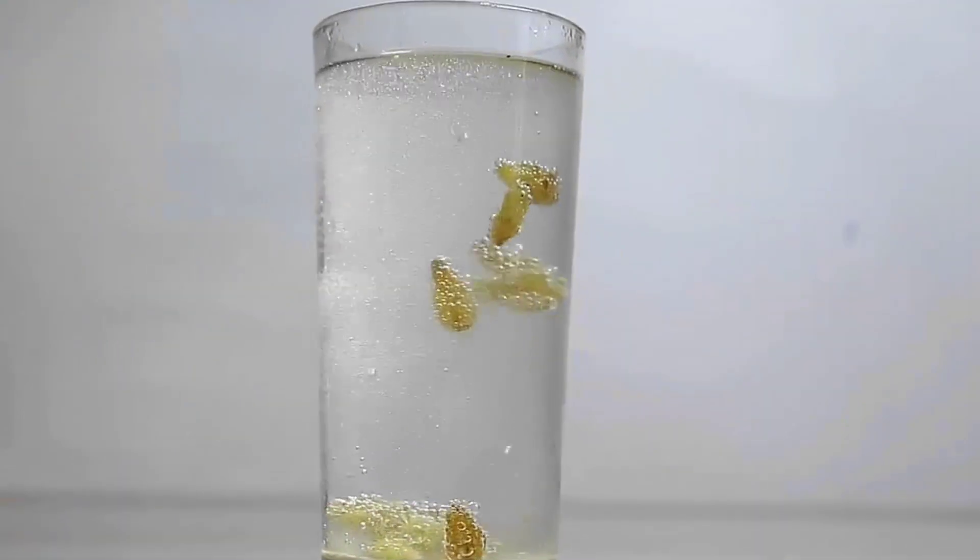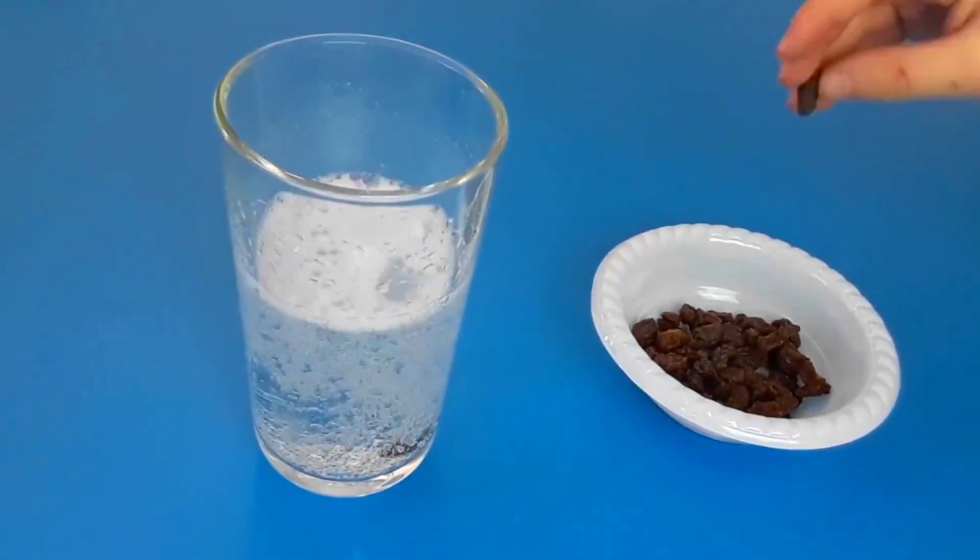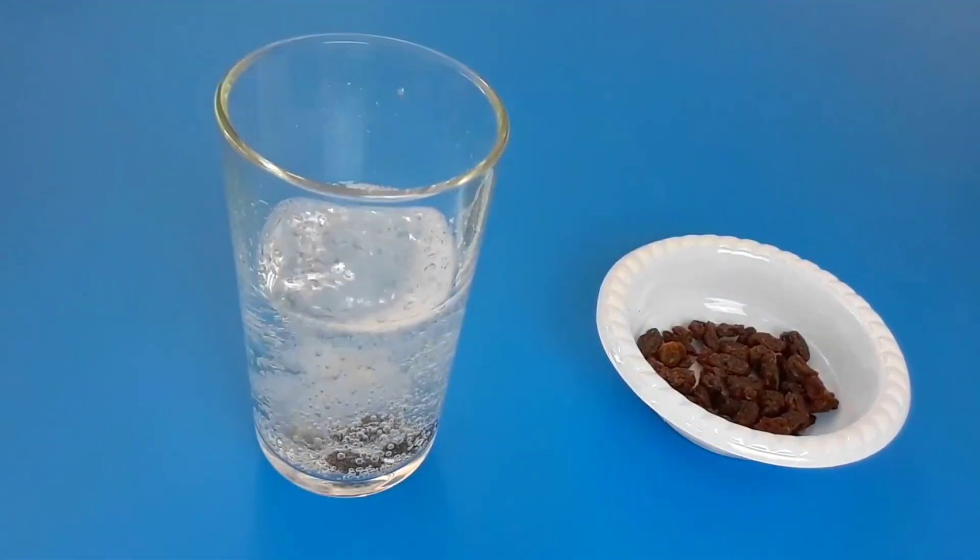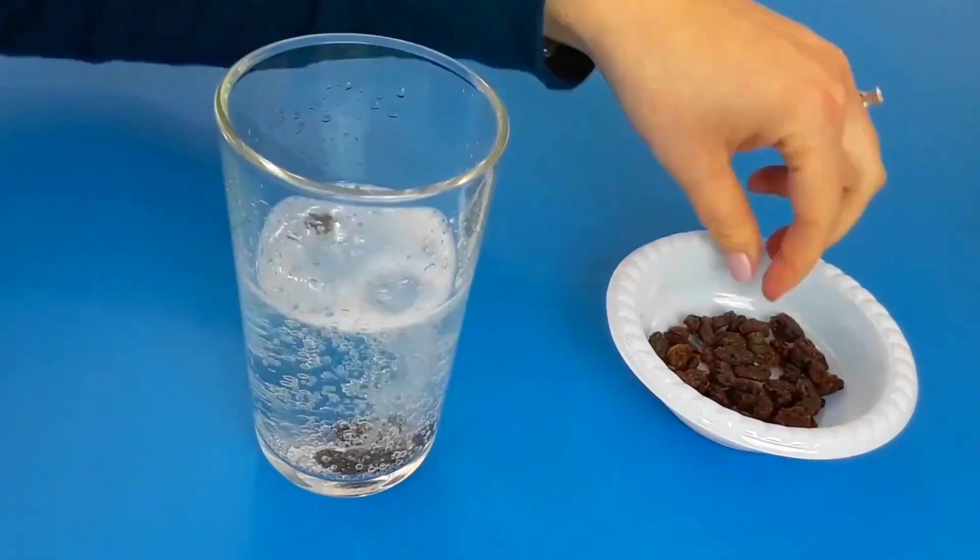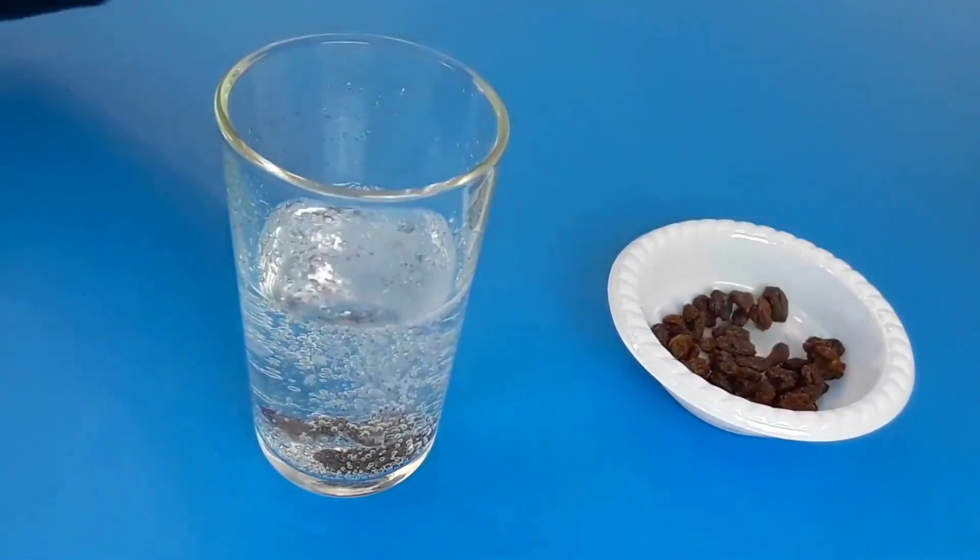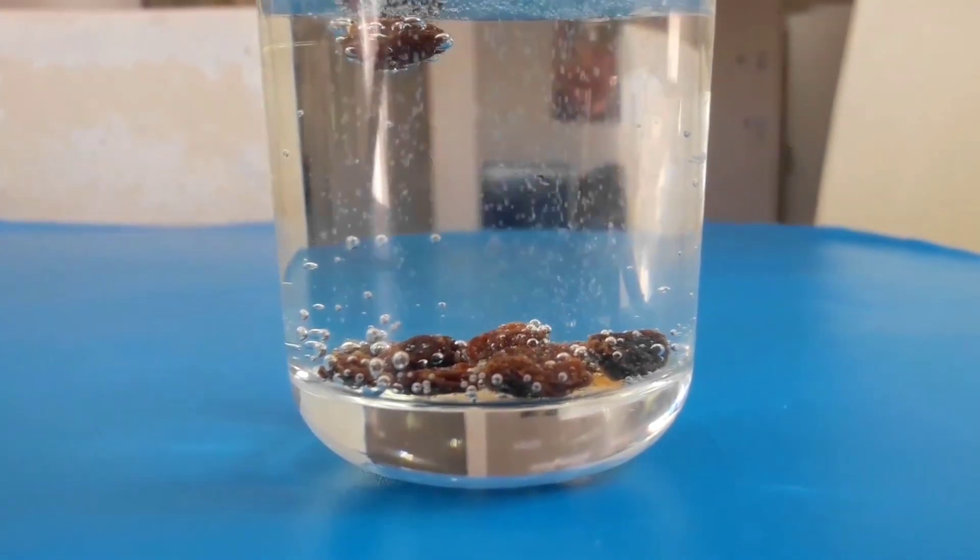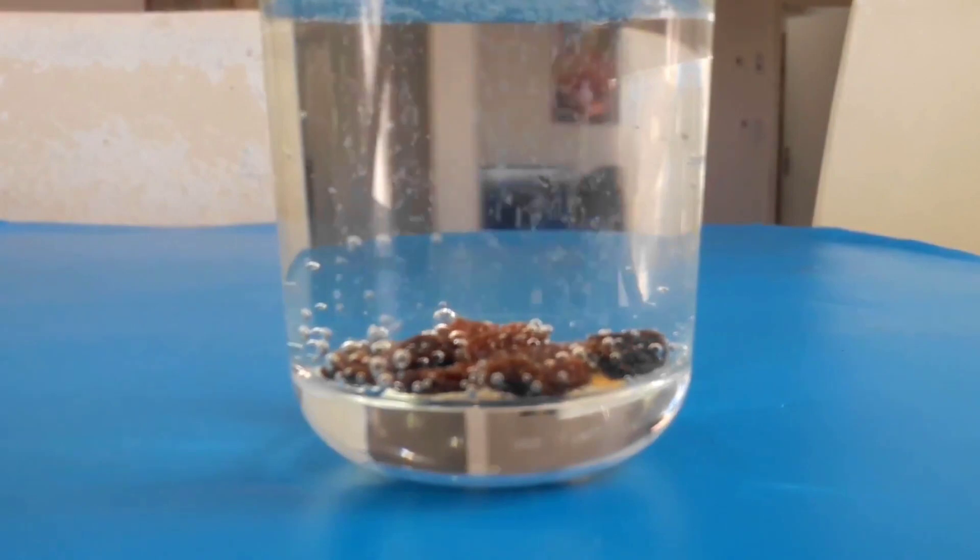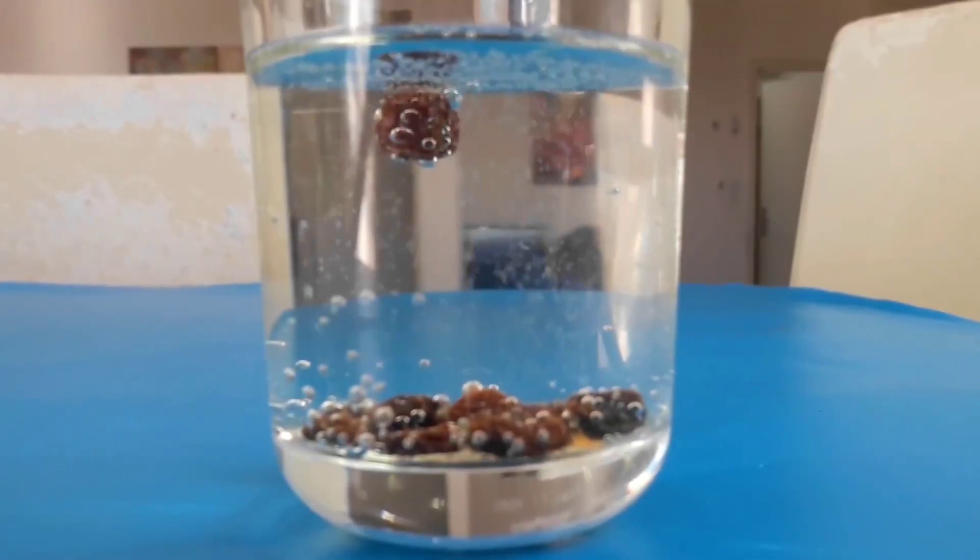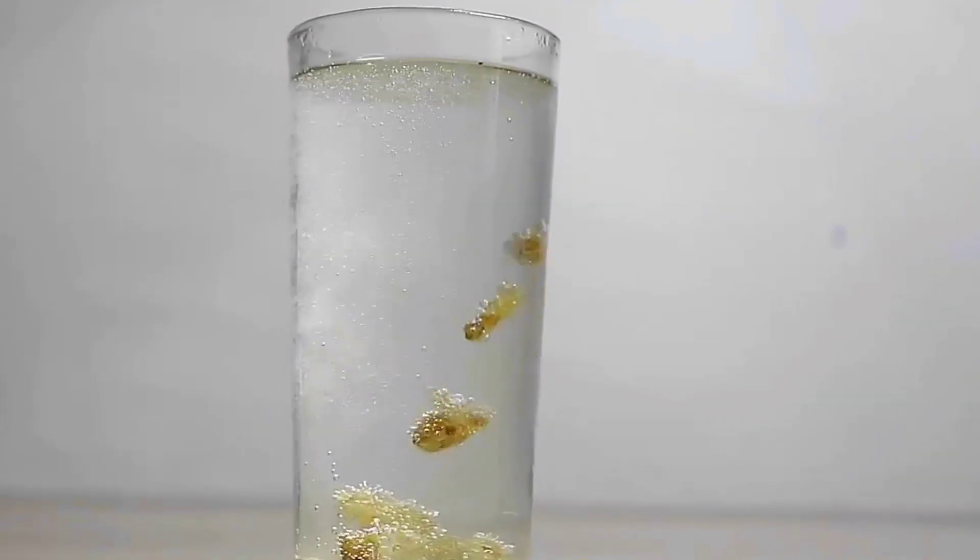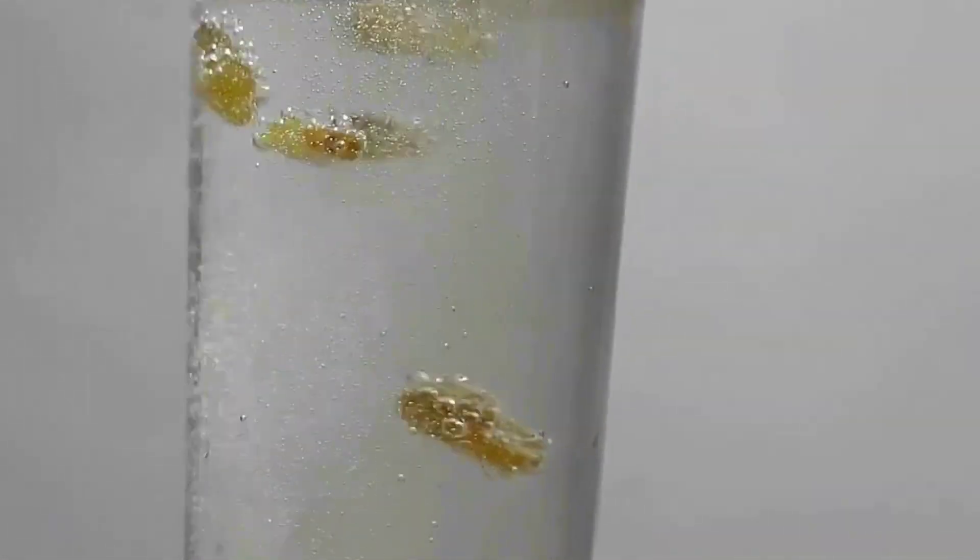This happens because the carbon dioxide gas in the soda attaches to the rough surface of the raisins, creating bubbles that lift them to the surface. Once the bubbles pop, the raisins sink back down, creating a continuous cycle of dancing motion. Kids will be fascinated by the lively and entertaining dance of the raisins and will enjoy experimenting with other small objects to see if they react the same way in the soda. It's a fun and educational experiment that introduces kids to the principles of gas solubility and density in a playful and interactive way.